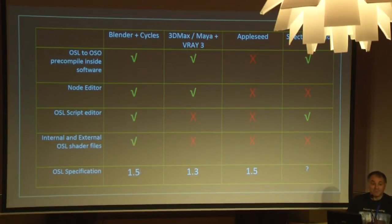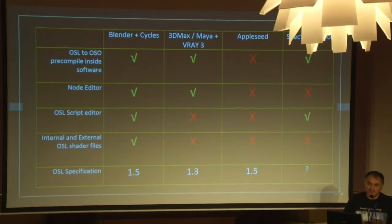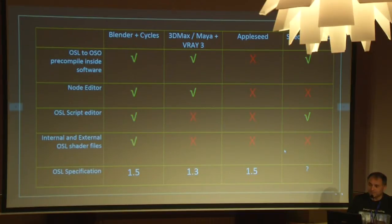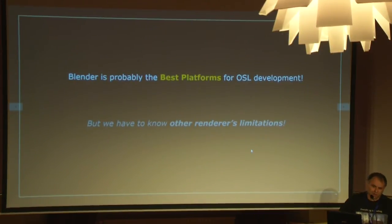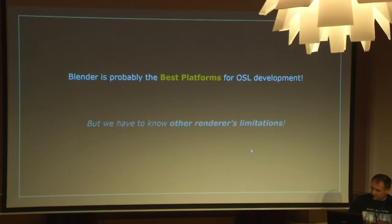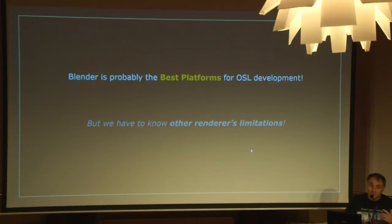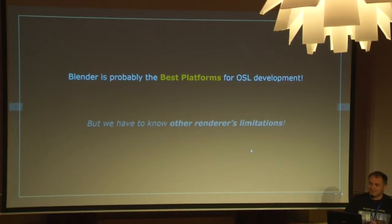In Spectral Studio, there is no documentation about which specification they use. So you have to try to find which one. The only one which is doing everything is Blender. So I think that if you want to do OSL shading, it's a really nice start to start with Blender, and then adapt it to other software.